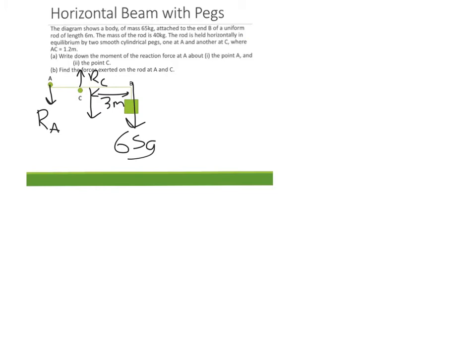So it's that uniform word that tells us that it's right in the middle. And we're told that this mass is 40, so we've got 40G going down there. The rod's held horizontally in equilibrium by those pegs that we just talked about. And we're also told that between A and C, it's 1.2 meters.